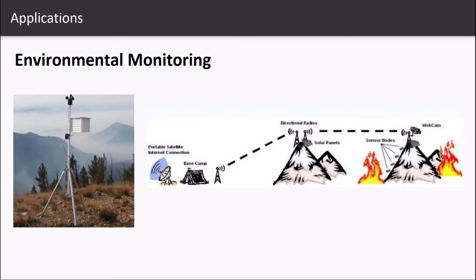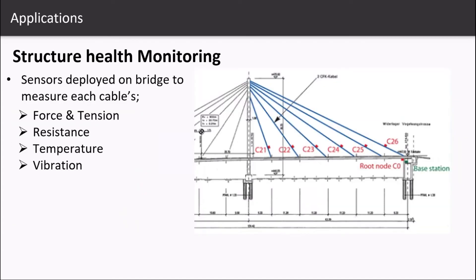Large infrastructures like dams, buildings, and bridges as shown can now be equipped with tiny sensor nodes that can measure the structure's health, like measuring each cable's force and tension, resistance, temperature, vibration, etc. Installing sensors that track the number of vehicles on the road allows us to calculate average traffic load, which helps us warn and alert about the weight limitations of the structure.